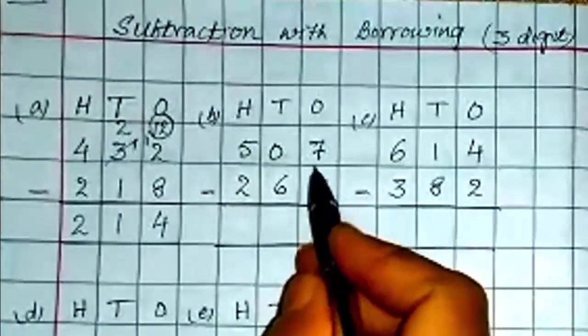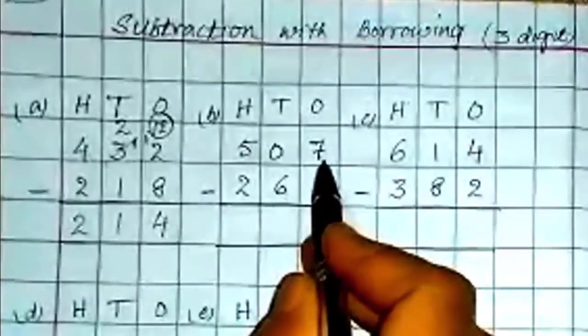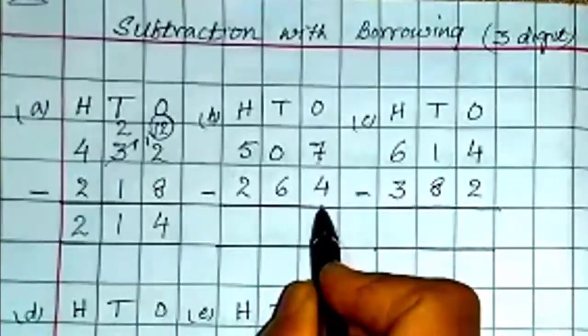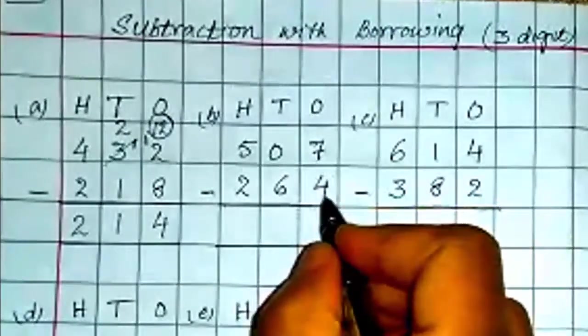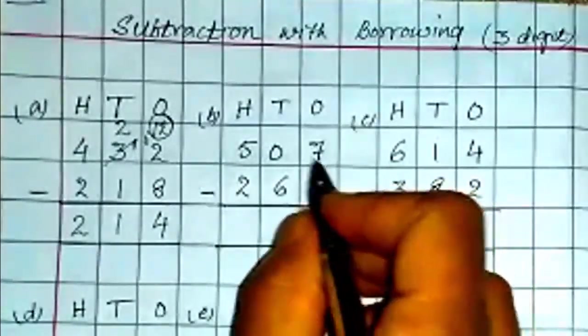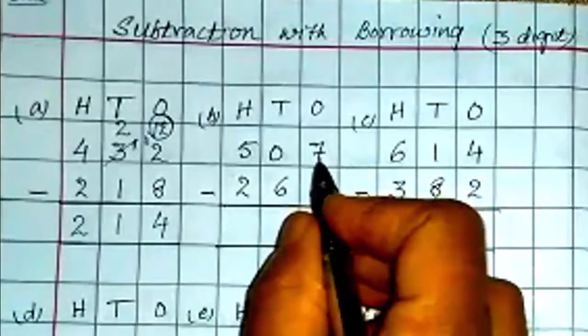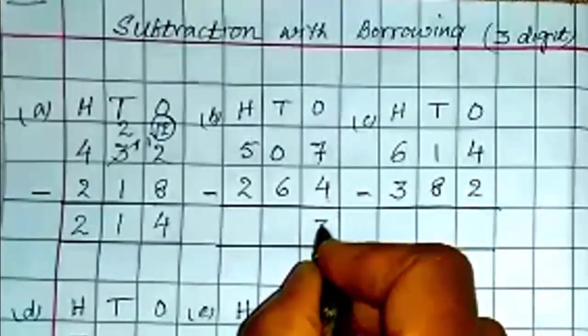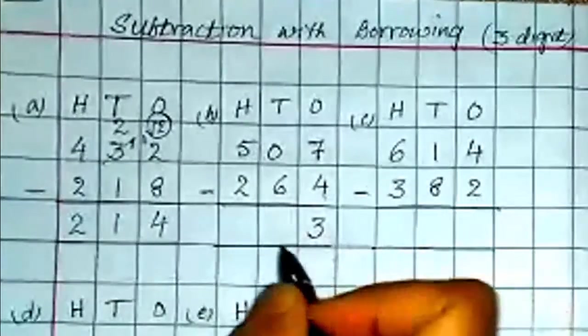Next term. Here you can observe on ones place you have a number 7 is greater than 4. So no need to borrow. 7 minus 4, how many? After 4, 5, 6, 7. 3 comes here.